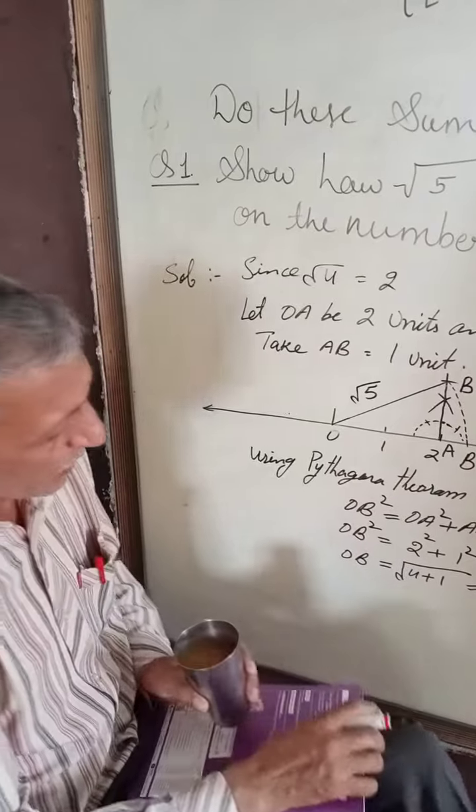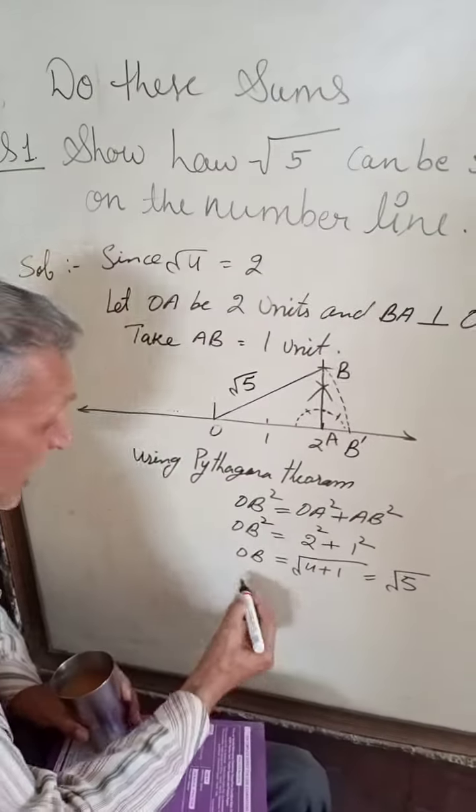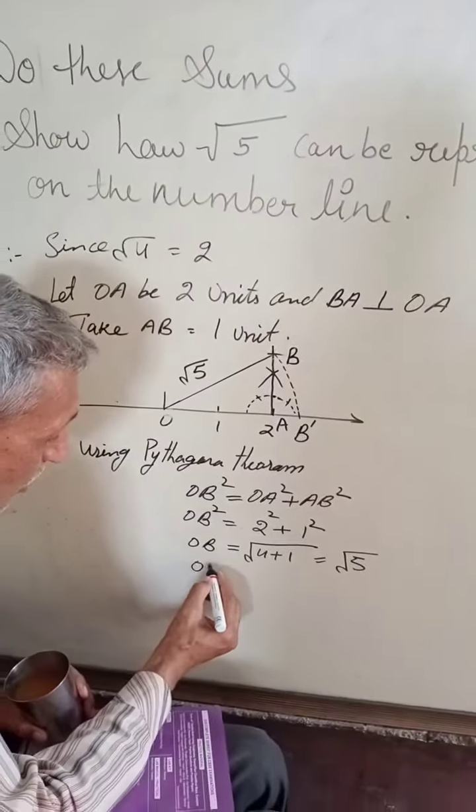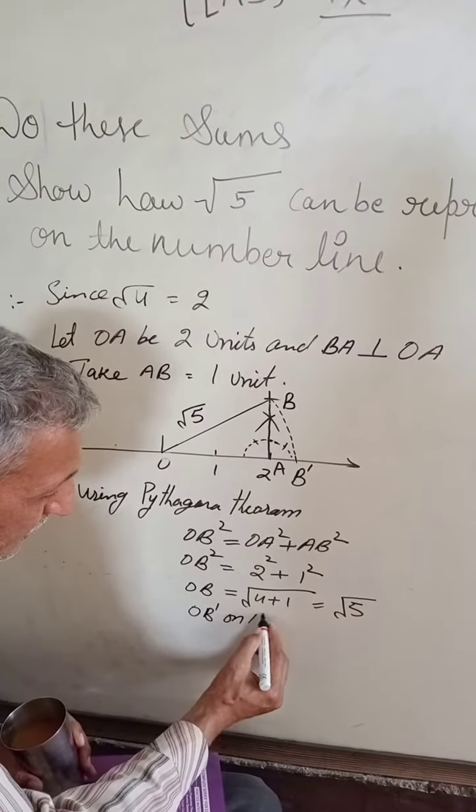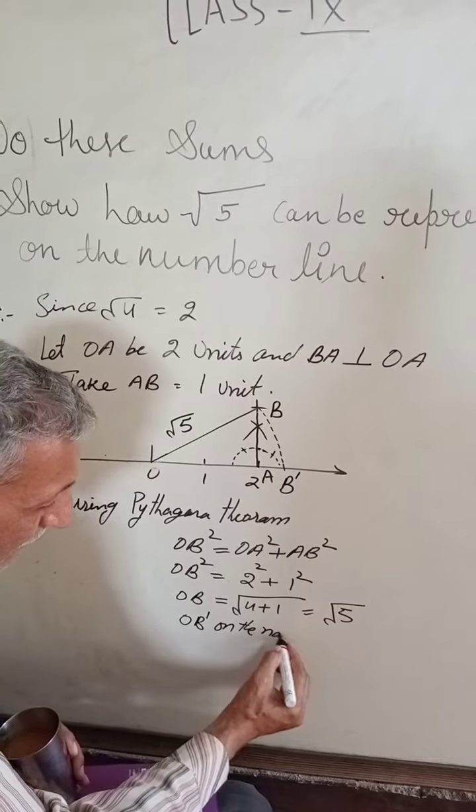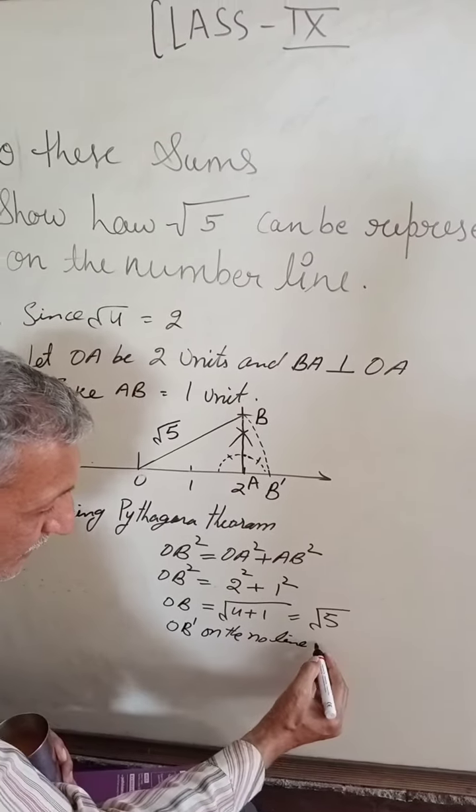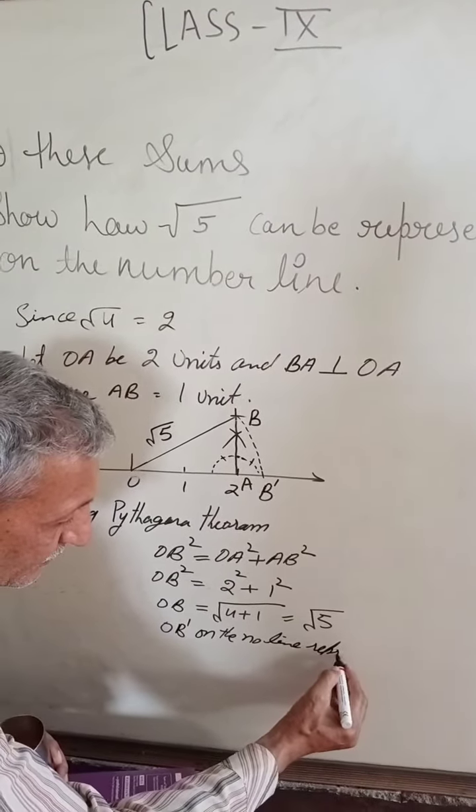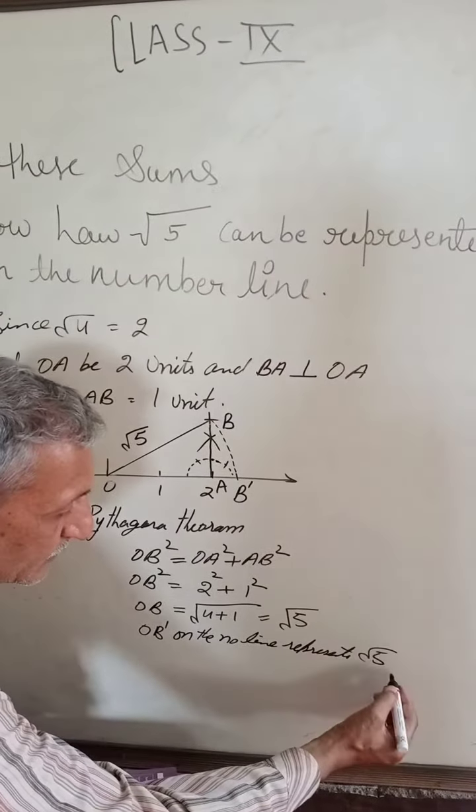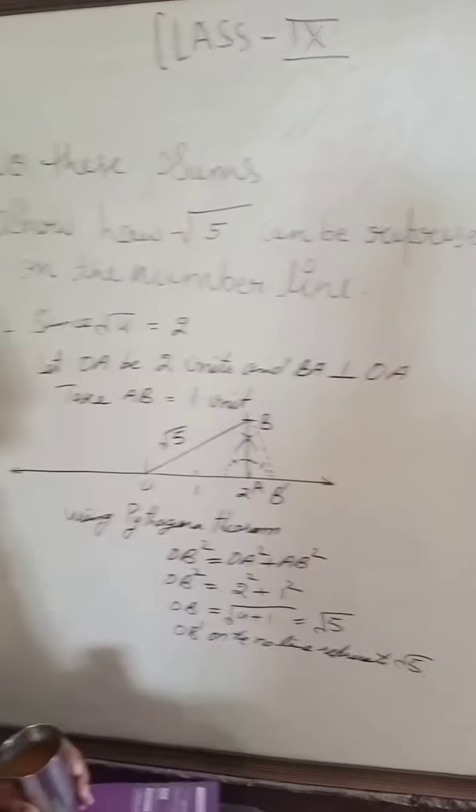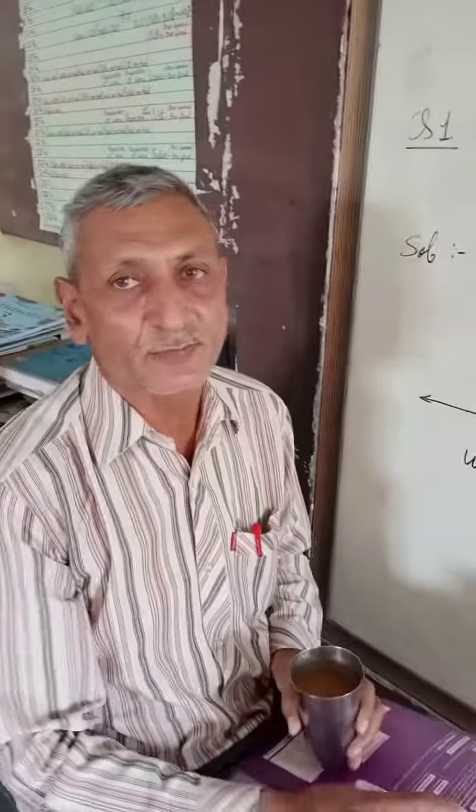Therefore, we should not forget to mention OB dash on the number line represents root 5. This is the complete solution. Thanks for joining. Thank you.